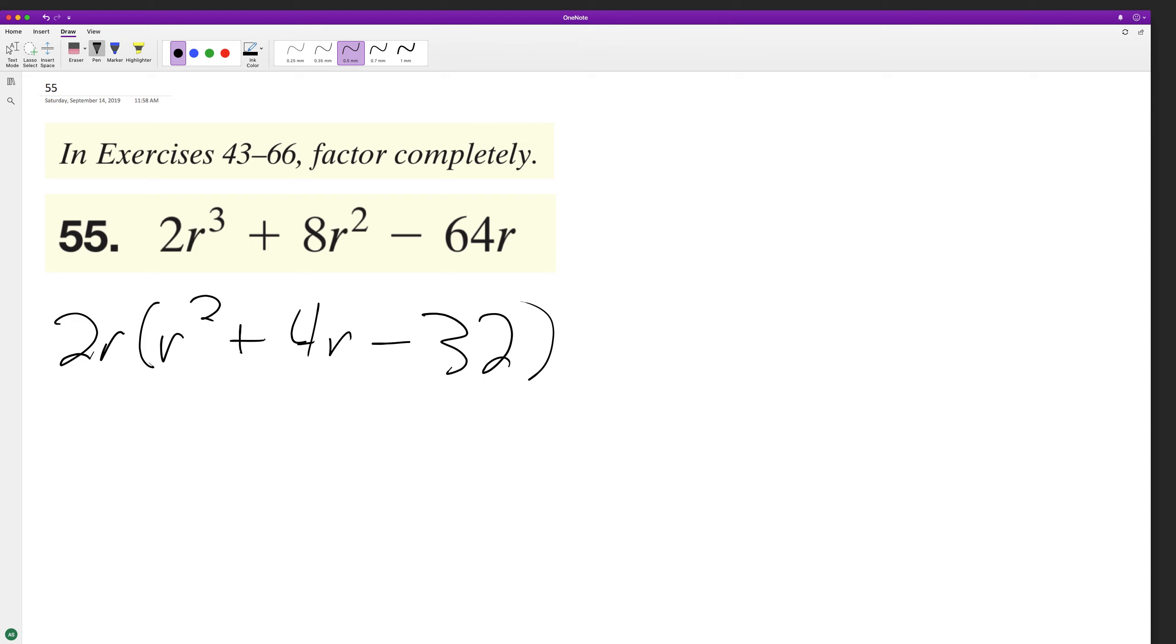So now we can factor this to be 2r, this will be r + 8, and then this is going to be r - 4.